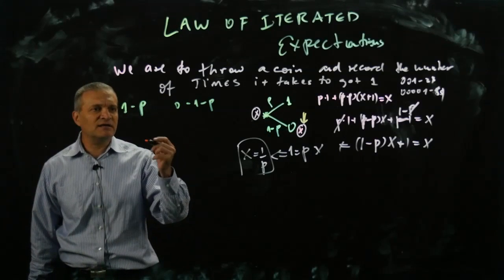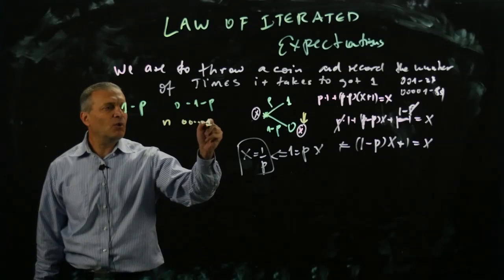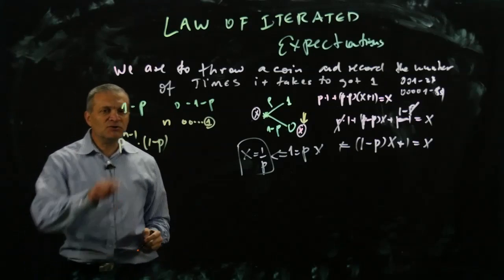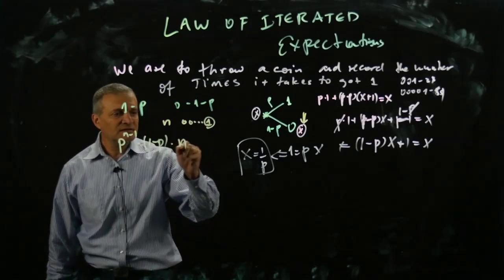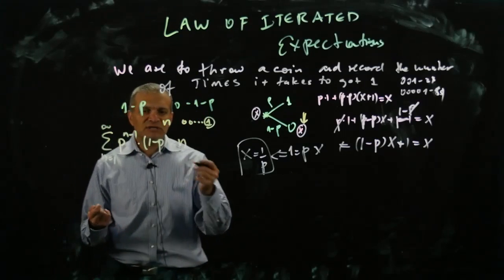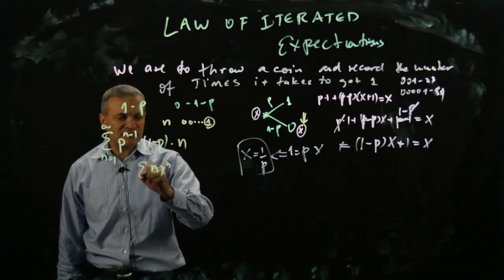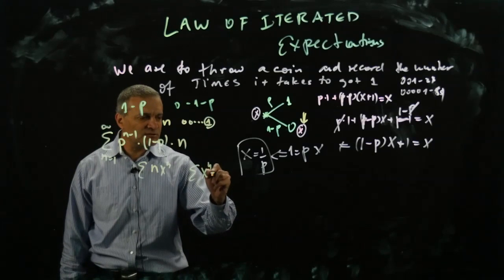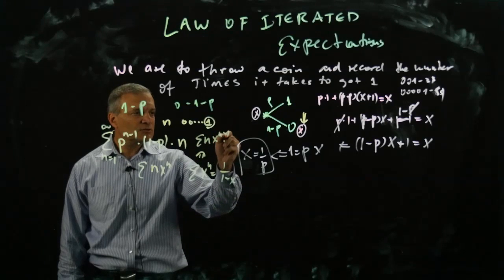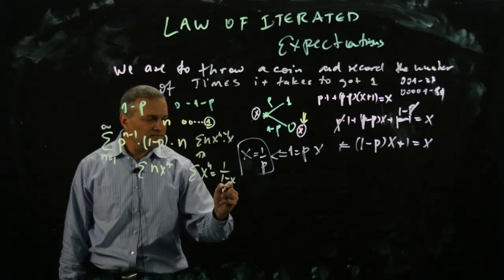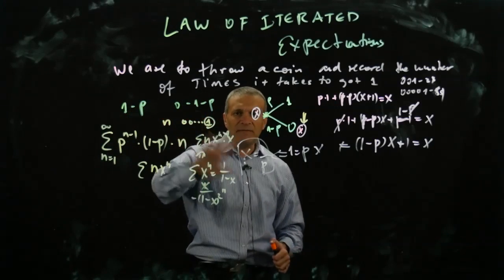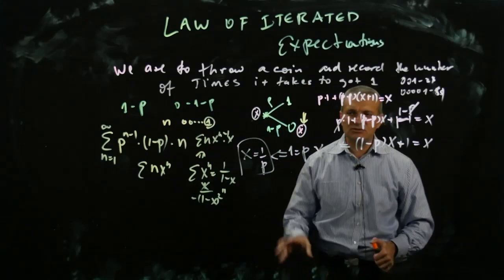To do it directly, you'd look at n and compute the probability of getting the first one at throw n: that's p times (one minus p)^(n-1). Then you need to sum this series. You can do it — you'd use the fact that the sum of x^n equals one over one minus x, take the derivative to get n times x^(n-1), multiply by x, and differentiate again. It's quite tricky, whereas the iterated expectations approach gives you a clean answer directly.